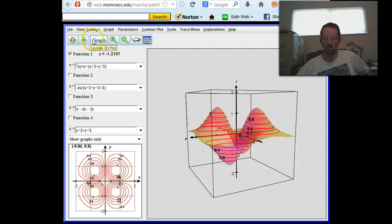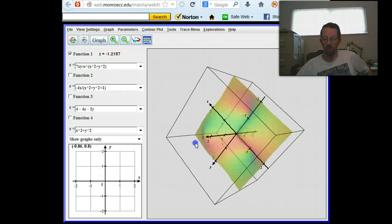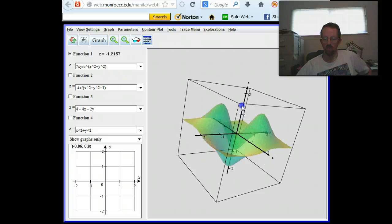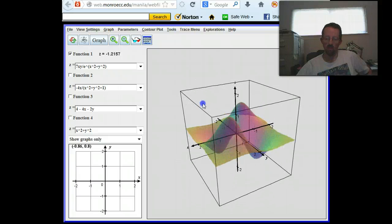And if I want to go back to without the contours, oh, it still has the same sort of transparent shading. That's okay.